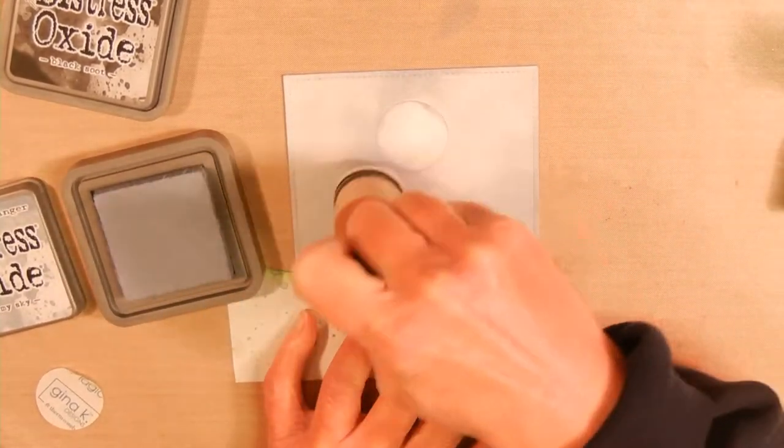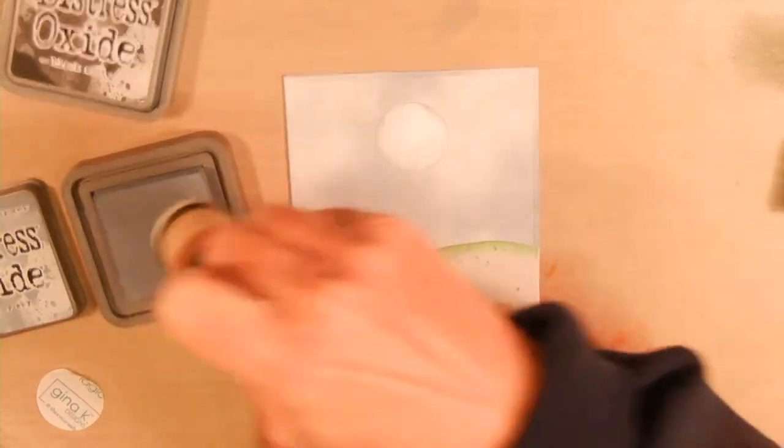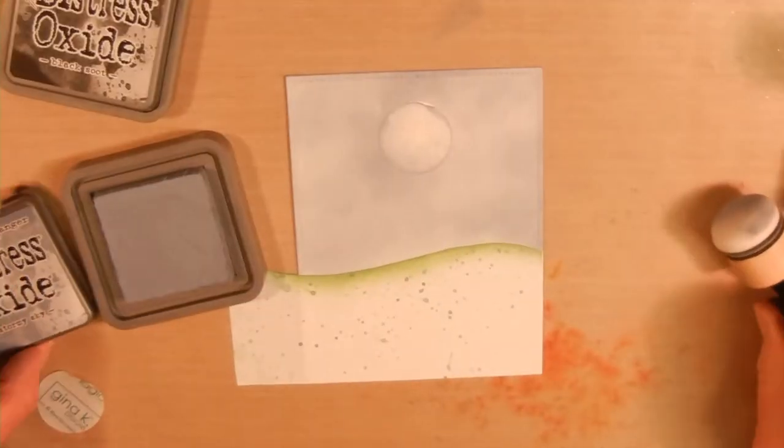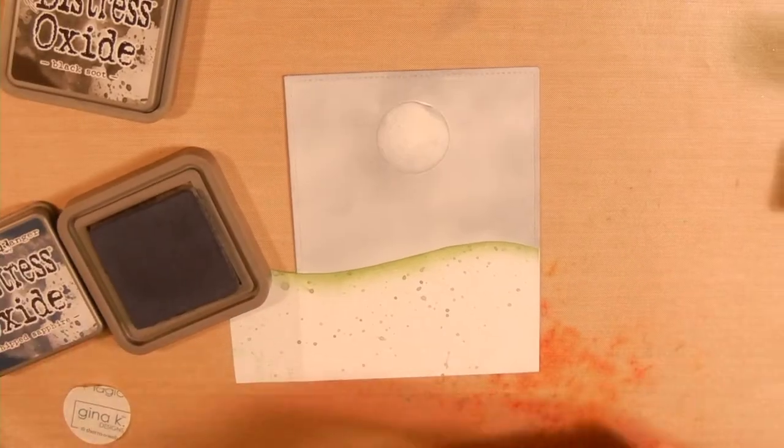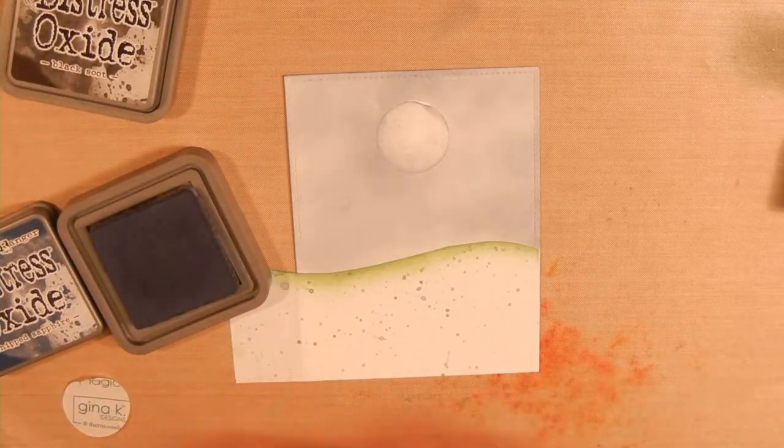I will speed the video up so it doesn't take as long and I'll probably cut out some of the coloring and the ink blending because otherwise the video is going to be very long. The next ink that I'm using is Chipped Sapphire and this gives it a little bit more of a blue look to the sky.